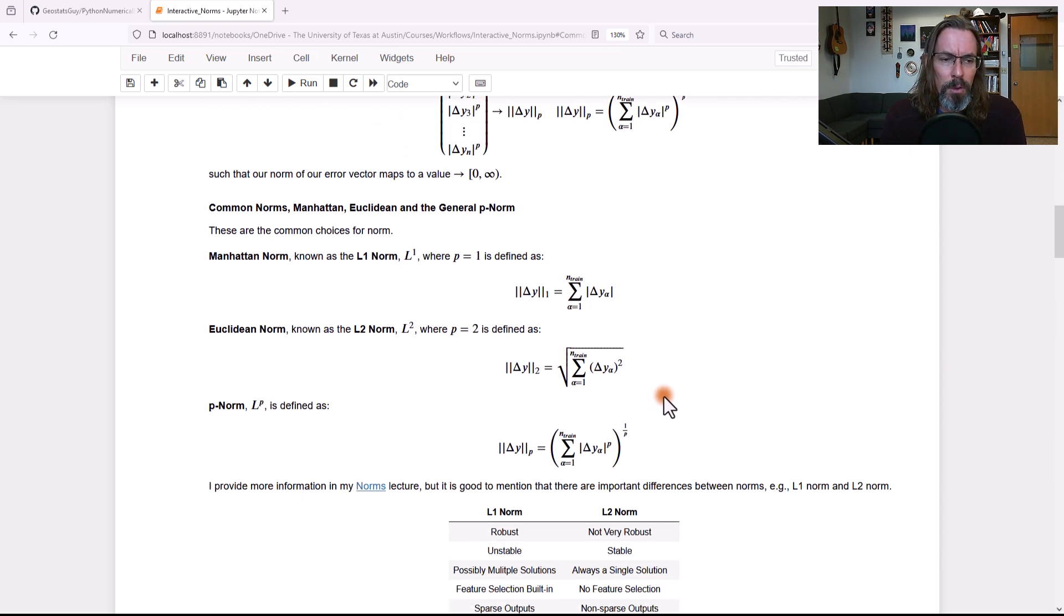Okay, now what are some of the norms we could work with? Common norms, Manhattan norm, also known as L1. With this notation, L to the exponent 1, this is where p is equal to 1. And if you look at the equation above, the general p norm representation, you'll see it's just the sum of the absolute values. This is also known as a city block norm, and we'll talk a little bit more about that.